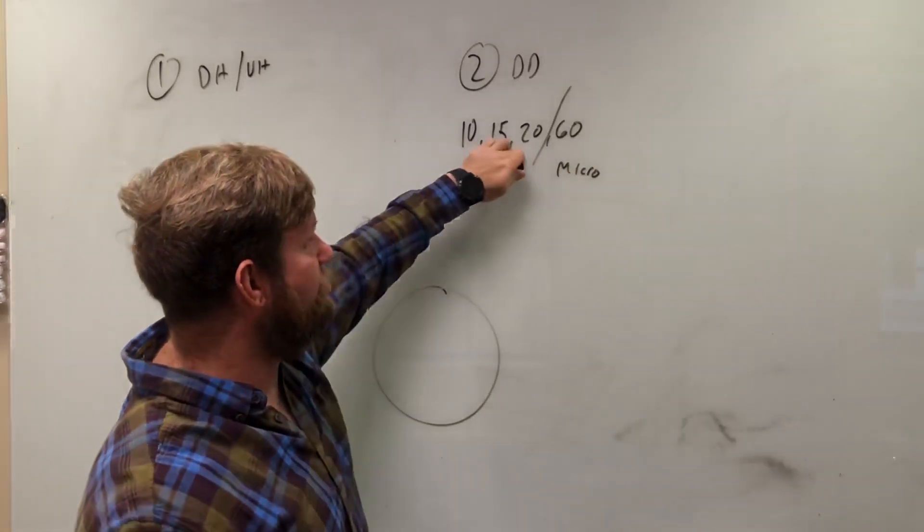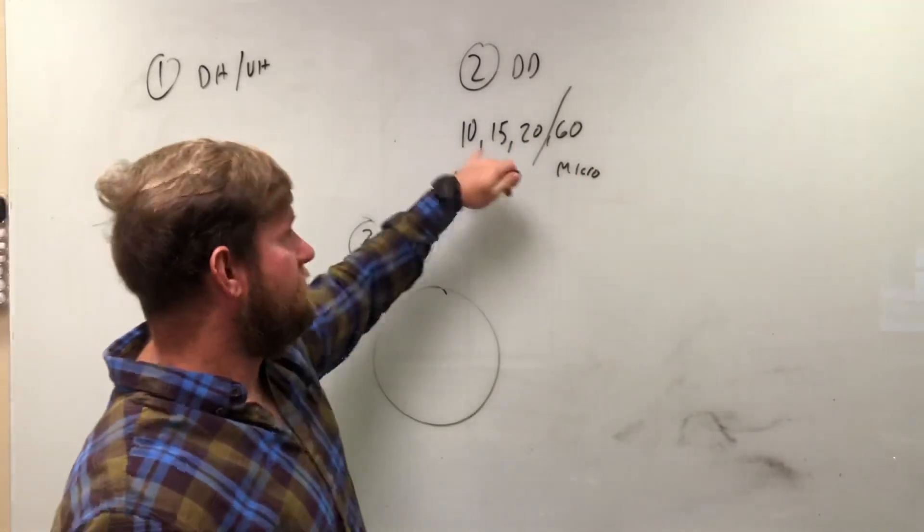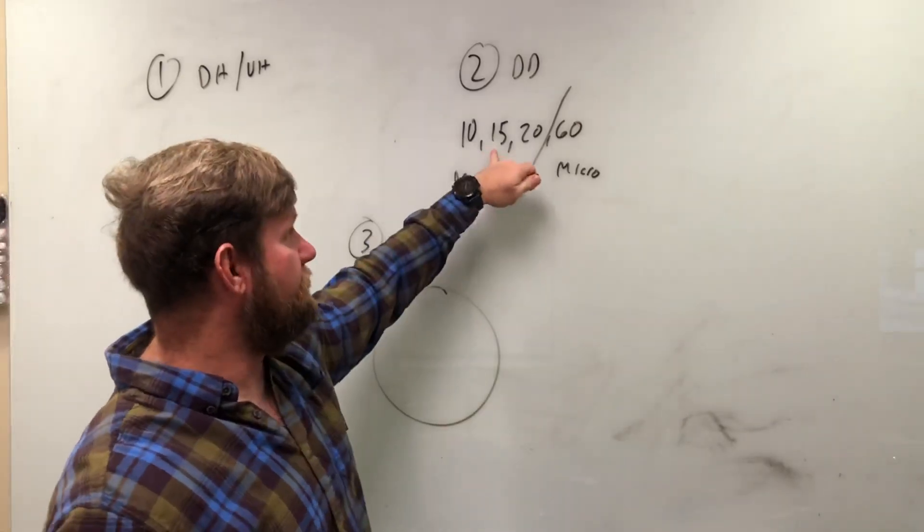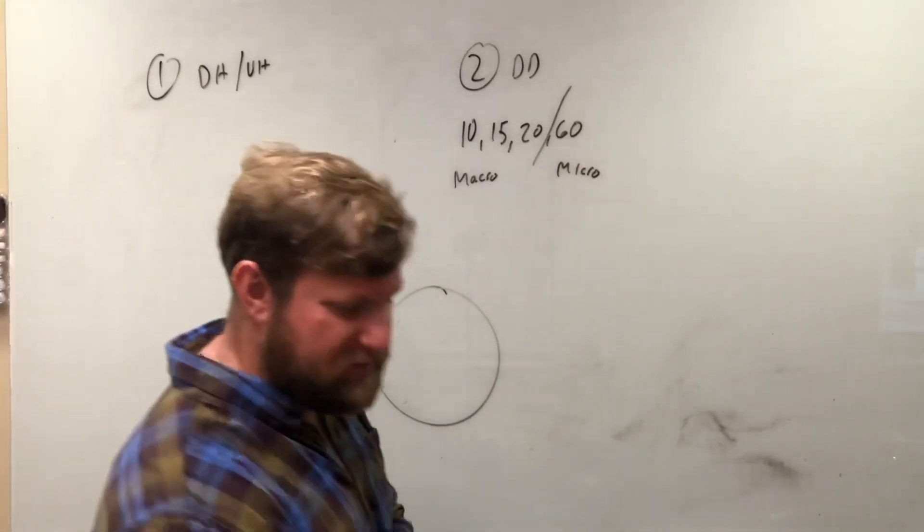So we have a 10, 15, 20, 60. We can kind of divide those all into each other. 10 will go into 60 six times. This will go in four times. This will go in three times. So this is the method to the madness.